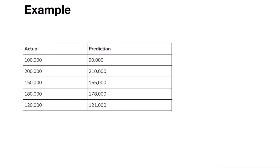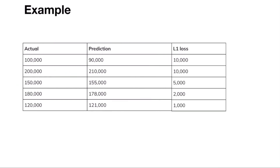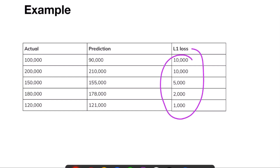If I calculate the absolute difference, that is what we call L1 loss — the absolute difference between actual and predicted values. These are individual loss values for individual examples, with different loss values for different examples.